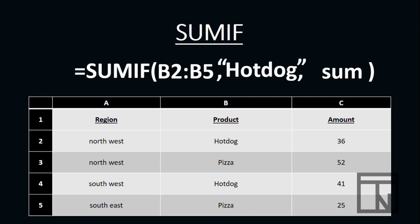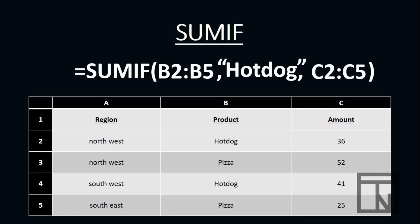The last piece of information is: once we've found the word hot dog, where is the number that we're going to total or sum? If our product is in B2 to B5, the amount we're going to total is in column C, somewhere between C2 and C5. So our sum range would be C2 to C5. Now we have a complete SUMIF statement, which basically says we're going to look for the word hot dog somewhere between cells B2 to B5, and when we find it, we're going to get a total of the amounts contained in the range C2 to C5. And that is our SUMIF function.